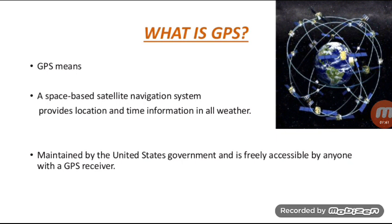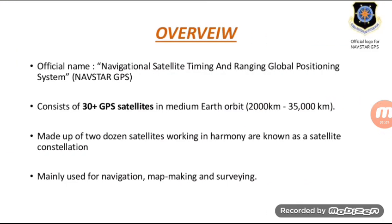GPS is a space-based satellite navigation system that provides location and time information in all weather conditions. It is maintained by the United States government and is freely accessible by anyone with a GPS receiver. Its official name is Navigational Satellite Timing and Ranging Global Positioning System — NAVSTAR GPS — and it consists of more than 30 GPS satellites in medium earth orbit.